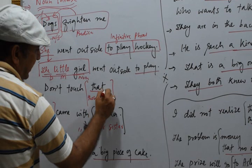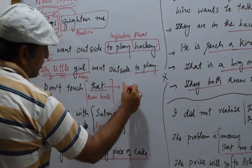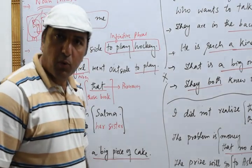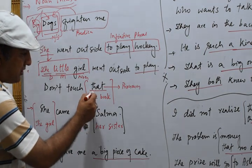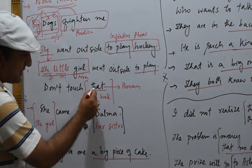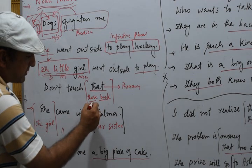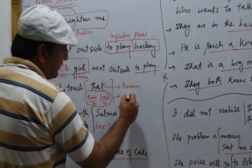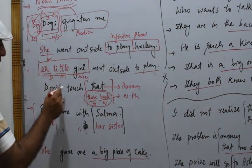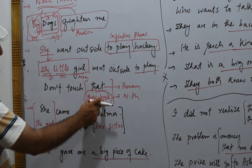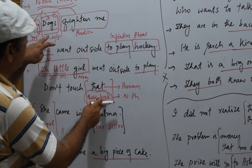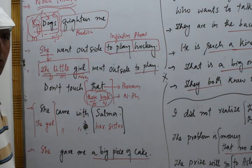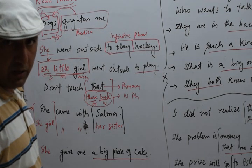Next sentence: 'Don't touch that.' Here 'that' is a pronoun. A noun phrase can be used in place of a noun or pronoun. So we remove the pronoun 'that' and replace it with 'those books' — 'those' is modifier and 'books' is a noun. So 'those books' is also a noun phrase. It works as an object here.